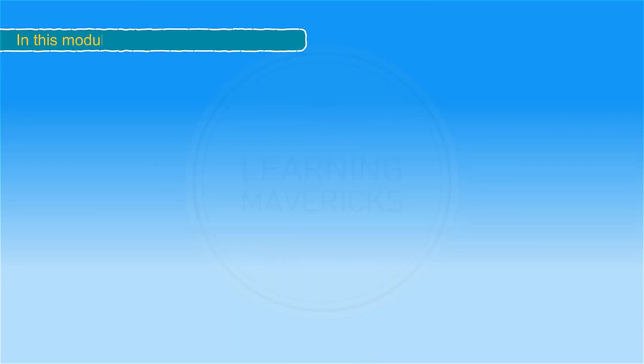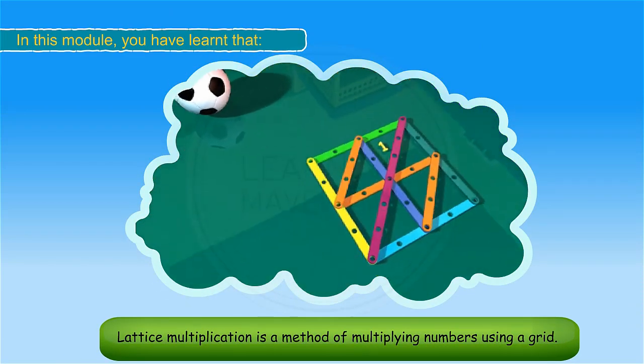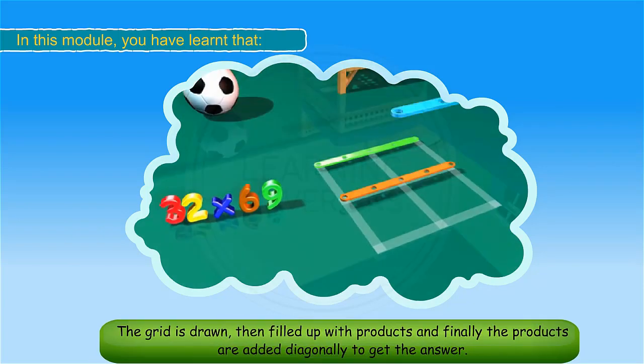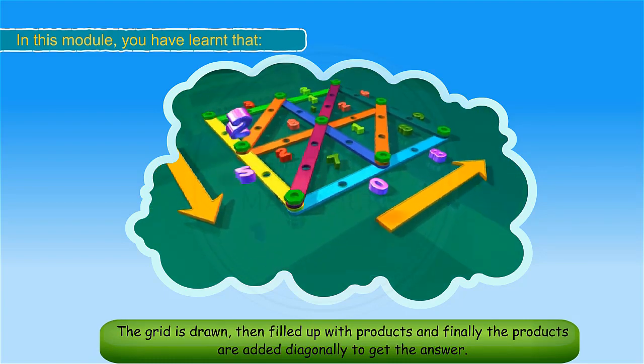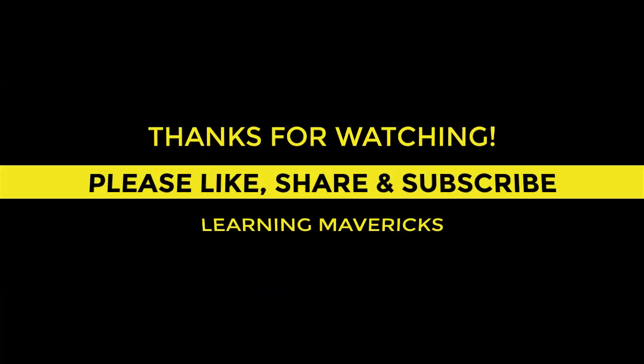In this module you have learned that lattice multiplication is a method of multiplying numbers using a grid. The grid is drawn, then filled up with products, and finally the products are added diagonally to get the answer.